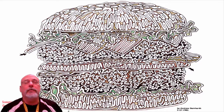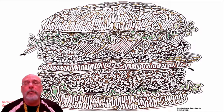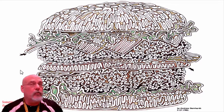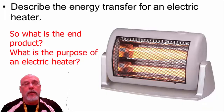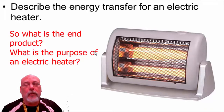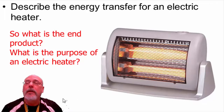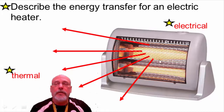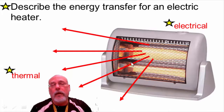For an electric heater, think about the end result: what is its main purpose? It gives off some light, but the main purpose is to create heat — thermal energy. That thermal energy is produced by electrical energy. Electric current moves through the heater and produces thermal heat energy, so it's an electrical to thermal energy transformation.